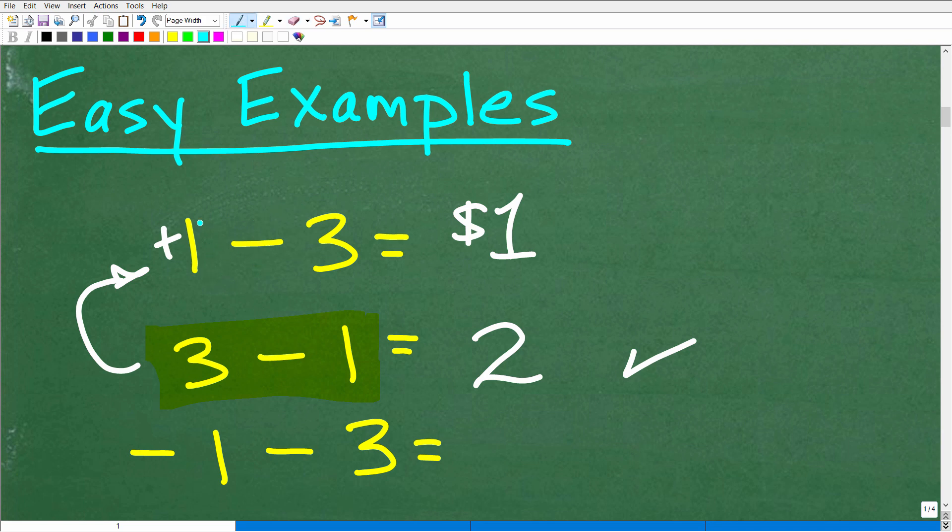So, when you see a subtraction sign, like 1 minus 3, I want you to turn this into a plus sign and then take that negative sign and assign it to this number to the right of this new addition symbol. So, right here, 3 minus 1 is what? 3 plus a negative 1, which, of course, is the same as 3 minus 1.